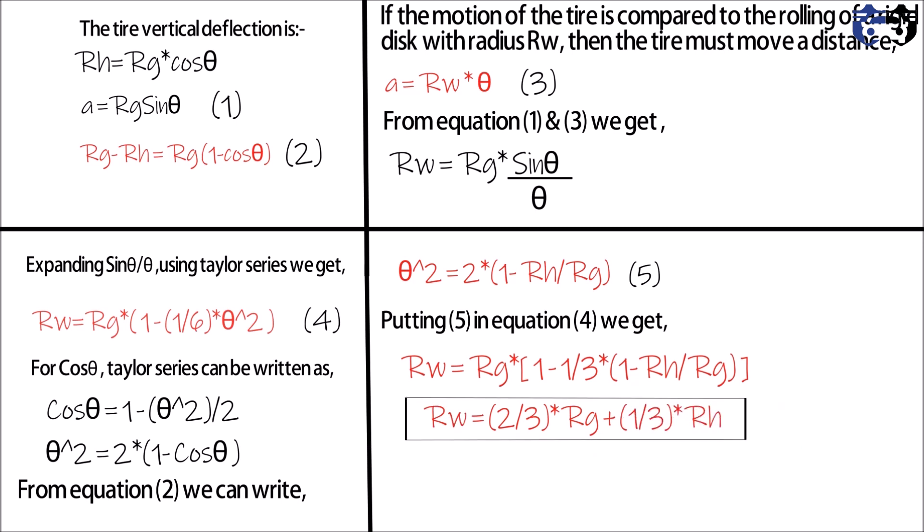So here you can see that Rh is a function of the tire load which is Fz. So as the load increases, Rh will also decrease. So Rh can be written as Rg minus Fz divided by Kz, where Kz is the tire vertical stiffness. So this much for this video.